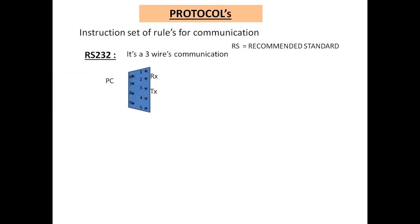You can see some connectors — a nine-pin connector in a D-shape — one on the PC and the other on the PLC. Out of these nine pins, pin number two is for receiving and pin number three is for transmitting. When transferring or receiving data from one end to another, pin two to pin three — that is what is known as 232.